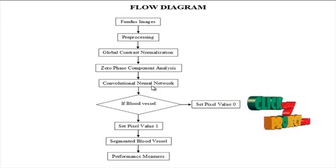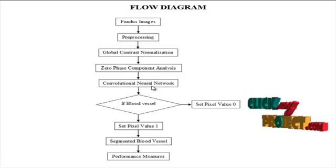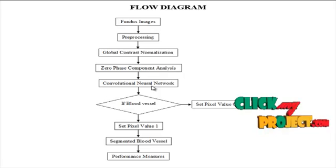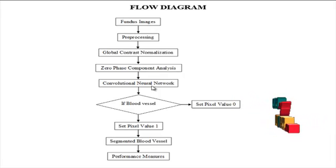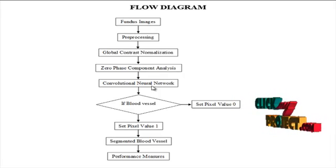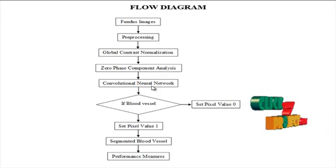After the pre-processing step, we move on to the convolutional neural network. The convolutional neural network takes the input images and we train the dataset and give the trained values and labels to the classifier.